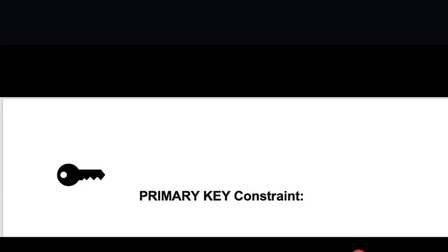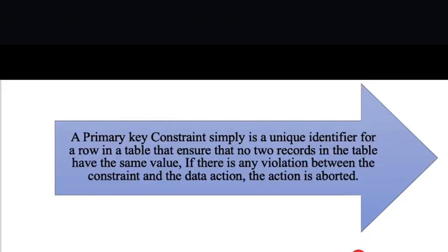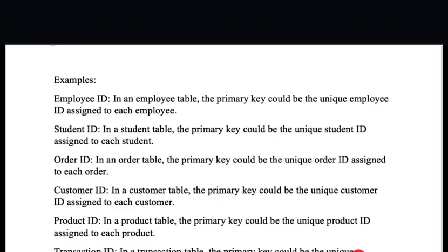Hello everyone, today we're going to be talking about a topic: primary key constraint. A primary key constraint is simply a unique identifier for a row in a table that ensures that no two records in the table have the same value. If there is any violation between the constraint and a data action, the action is aborted. A few examples are employee ID, student ID, order ID, and any criteria that can be used to categorize a primary key in a table.